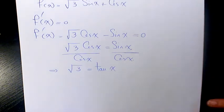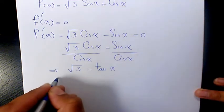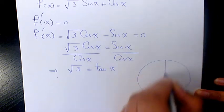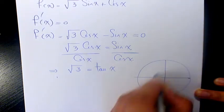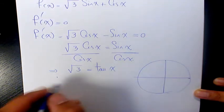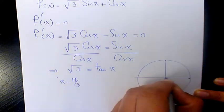So tan x = √3. If we consider the circle from 0 to 2π, we have x = π/3, which is here,